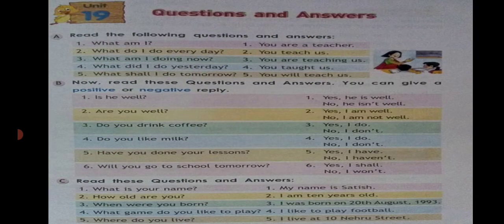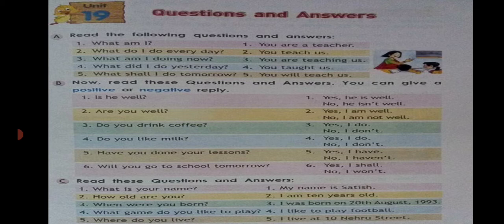Let's move to the next unit — Unit 19: Question and Answer. It's the same as interrogative sentences. Read the following questions and answers based on a picture: 'What am I?' — 'You are a teacher.' 'What do I do every day?' — 'You teach.' 'What am I doing now?' — 'You are teaching us.' 'What did I do yesterday?' — 'You taught us.' 'What shall I do tomorrow?' — 'You will teach us.' So based on the picture given, we have asked questions and answered them.